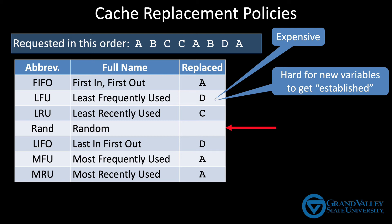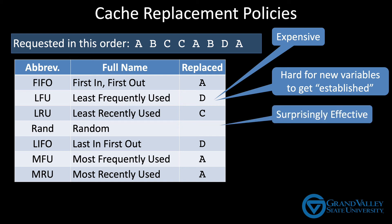Random is also an interesting one to talk about. It's initially appealing for its simplicity. And as it turns out, it's surprisingly effective — most people don't expect random decisions to be effective, but over a wide variety of programs, a random replacement policy doesn't do too bad. But it's not all that popular because doing randomness in hardware is more expensive than you think. You can't do true randomness in hardware unless you hook something like a Geiger counter up to your computer, and algorithms that generate pseudo-random numbers are much slower than you'd want in a cache.